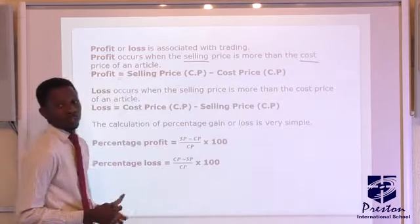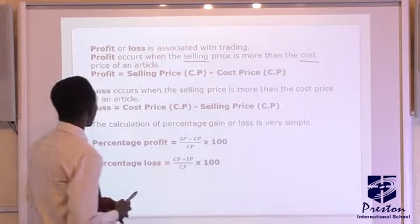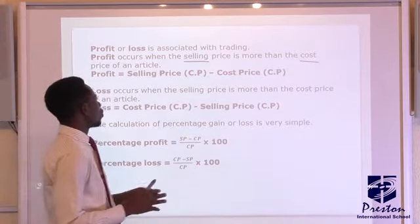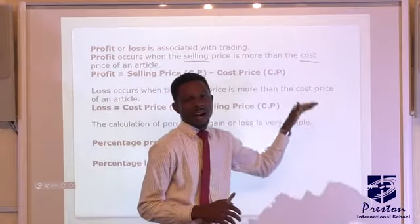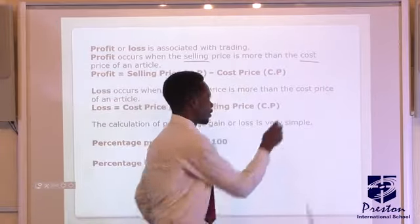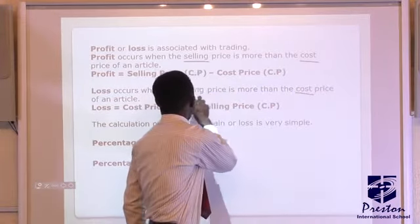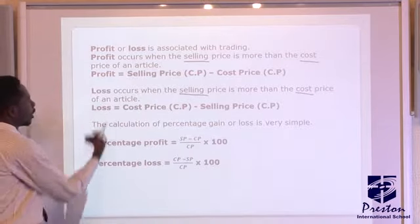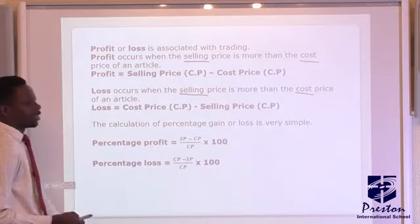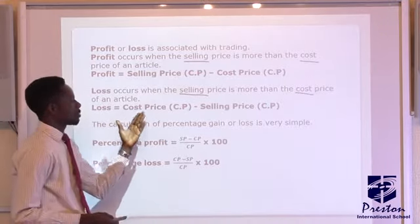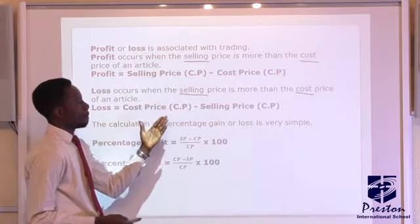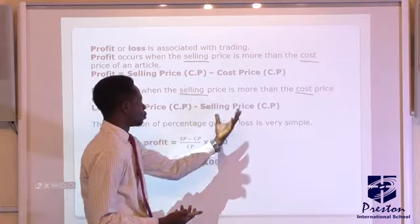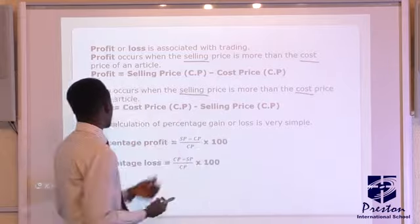Coming down to loss: loss occurs when the selling price is less than the cost price. When the selling price is less than the cost price, we have loss. To calculate loss, we say cost price minus selling price, because in this case the selling price is smaller, so we are subtracting it from the cost price.